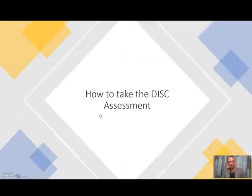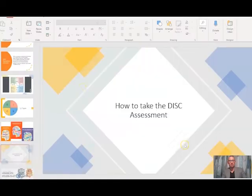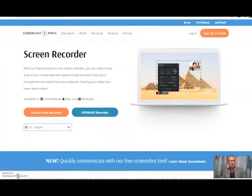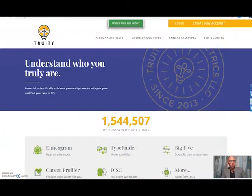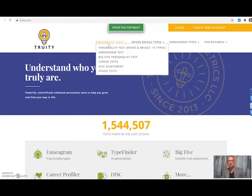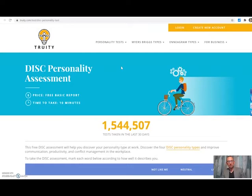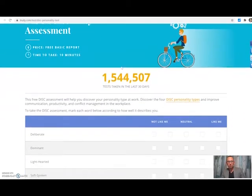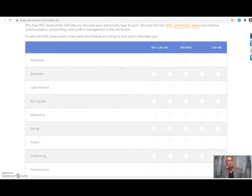So, in order to get these results, we do need to talk about how to take the DISC assessment. I'm going to go over two ways you can take the assessment. The first of which is going to be going to a website called truity.com. And you should have the link in the email from Jacinda. But under personality tests, there are so many you could try. But we want to take the DISC assessment. And this is going to be an English-based tool. And as soon as you scroll down, you're going to see individual words.